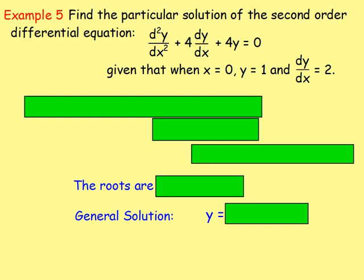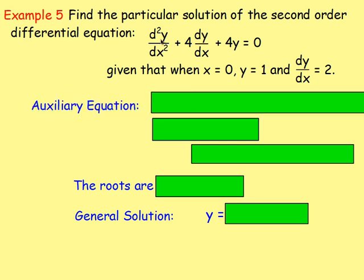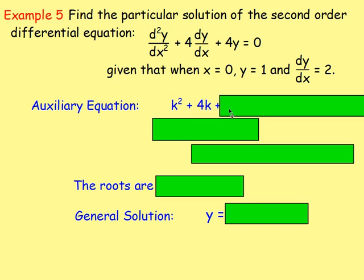Example 5: find the particular solution of the second-order differential equation d²y/dx² + 4 dy/dx + 4y = 0, given that when x is 0, y is 1, and dy/dx equals 2. The first thing we need is the auxiliary equation. Taking the coefficients — 1, 4, and 4 — the equation is k² + 4k + 4 = 0.